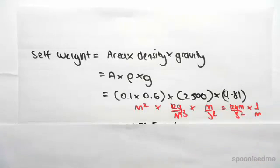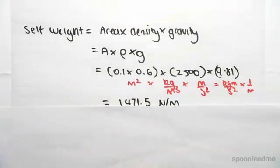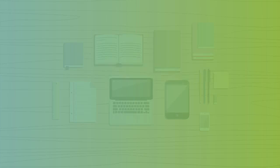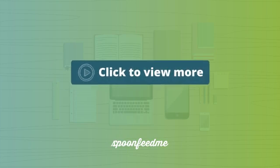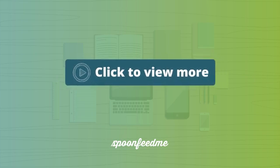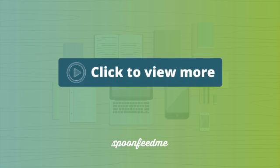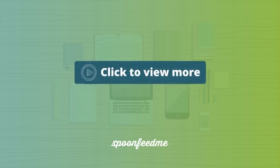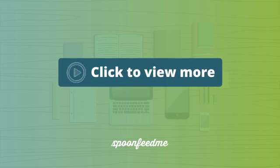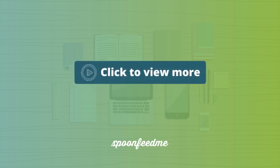So working this out, we have 0.1 by 0.6 by 2500 by 9.81, which gives us approximately 1471.5 newtons per meter.